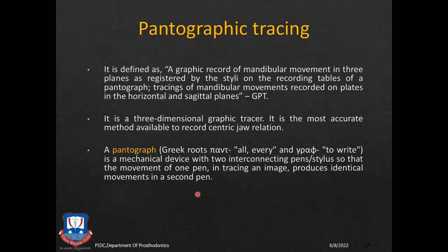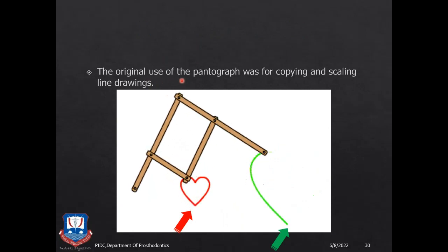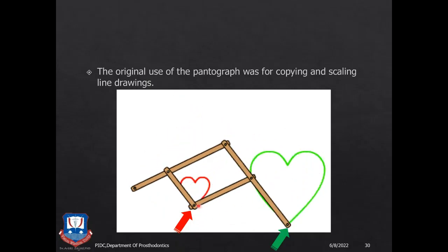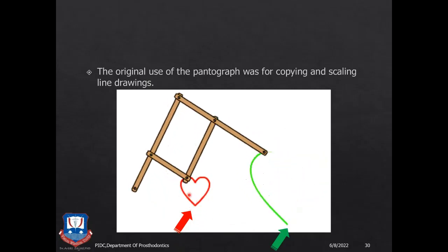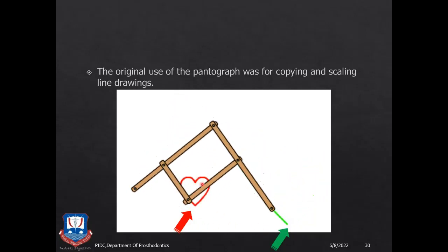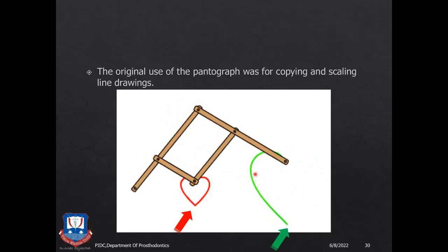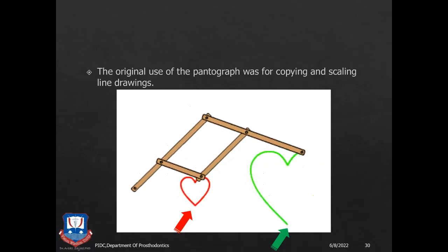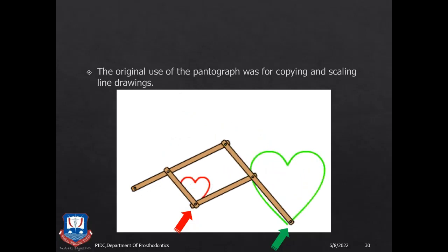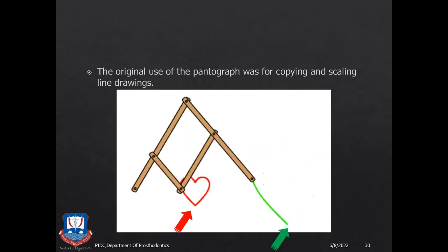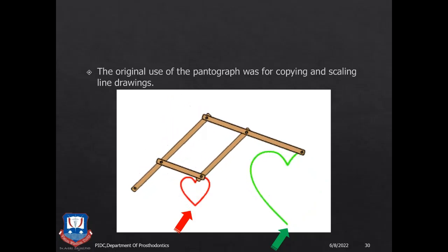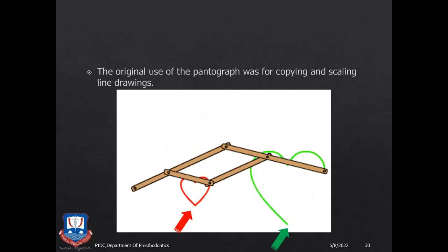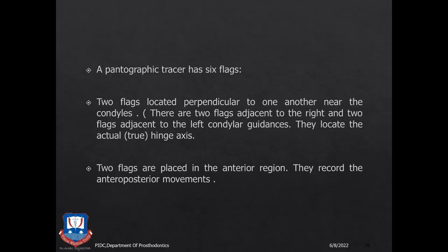A pantograph is a mechanical device with two interconnecting pens or styli so that when movement is traced with one pen, an identical image is produced with the second pen. This was used in early times to make identical copyright drawings. When attached to the patient's jaws, as the patient performs mandibular protrusive and lateral movements, those same movements are copied on the pantographic plate or flag by the tracer.